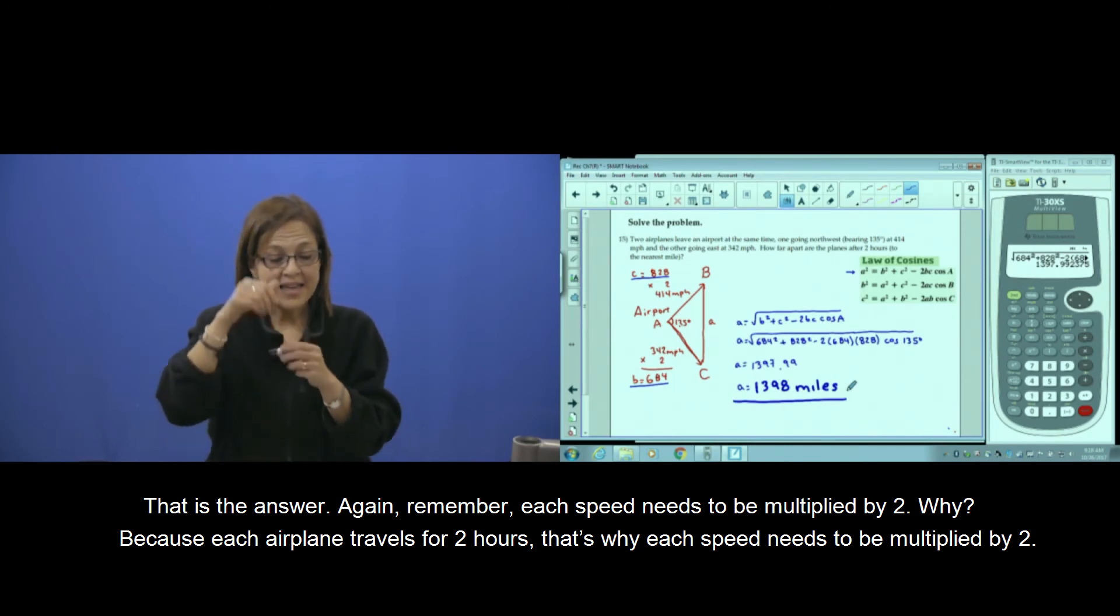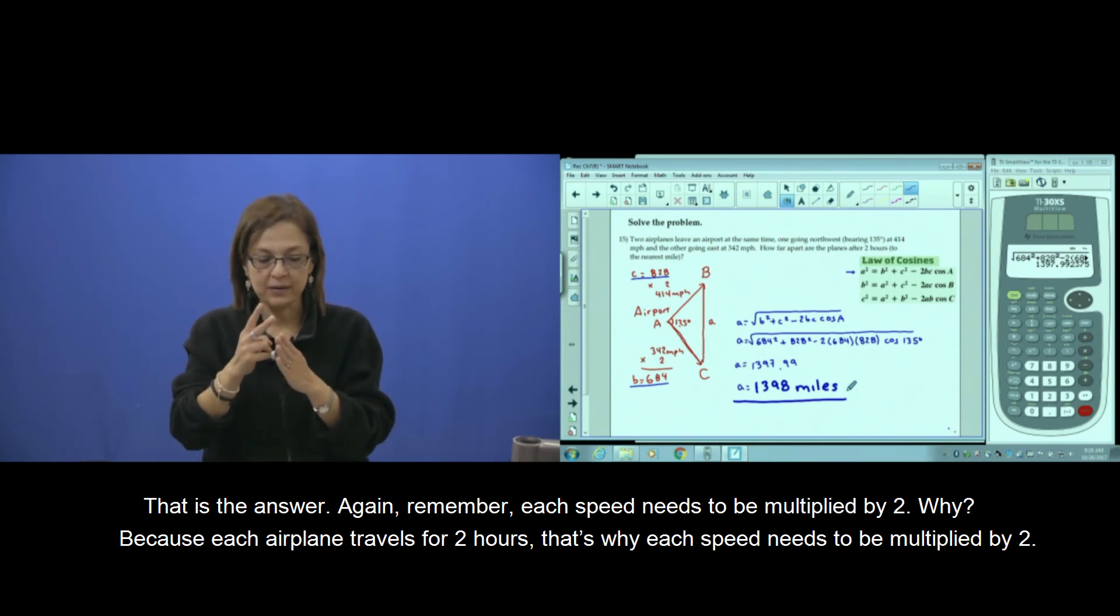Again, remember each speed needs to be multiplied by 2. Why? Because each airplane travels for 2 hours. That's why each speed needs to be multiplied by 2.